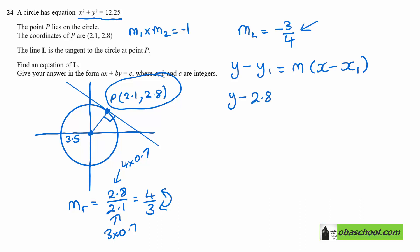So y minus 2.8 equals negative three quarters times x minus 2.1. That gives me 4y minus 2.8 equals negative 3 times x minus 2.1.